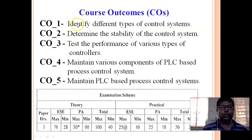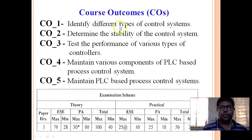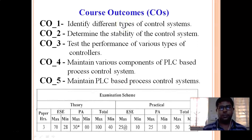CO1 is identifying different types of Control Systems. After learning this first chapter, students will be able to identify different control systems — what is meant by a control system, how they are classified, what are their block diagrams, and what each type does.